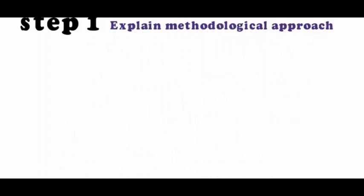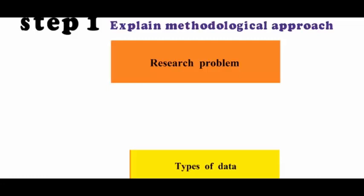Step one: Explain methodological approach. What is the research problem and what type of data do you need to address it? Do you aim to characterize something, gain more understanding of the topic, or establish cause and effect relations?